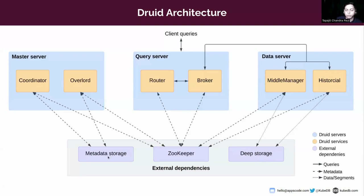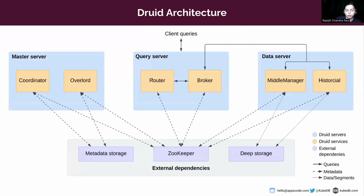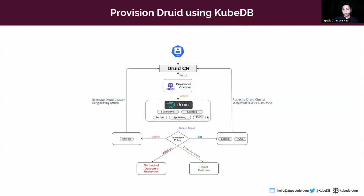Apache Druid relies on external metadata storage to house various metadata about the system, but not the actual data. In a cluster deployment, this is typically a traditional RDBMS like PostgreSQL or MySQL — so you can use a KubeDB-managed MySQL or KubeDB-managed PostgreSQL for Druid's metadata storage. Apache Druid also uses Apache ZooKeeper for internal service discovery, coordination, and leader election. You can also use our KubeDB-managed ZooKeeper, which was added in the latest release, to deploy ZooKeeper for a Druid cluster.